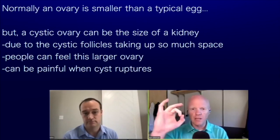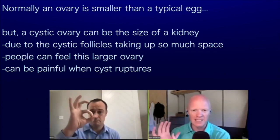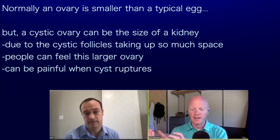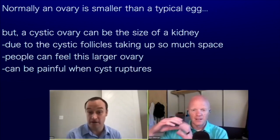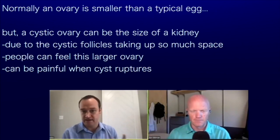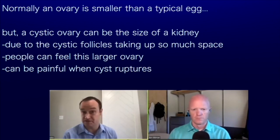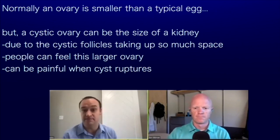Normally the ovary could fit in the palm of a hand — quite like the size of an egg or a little smaller. In one case, a cystic ovary was almost the size of a kidney. Some can get quite large, because the physics of follicles taking up more space stretches the ovary — people can feel that. That's why sometimes people have a ruptured cyst, which can be painful, and people often go to the emergency room for something like that.